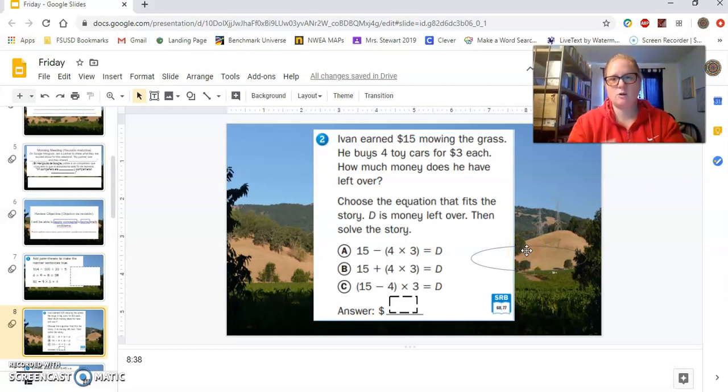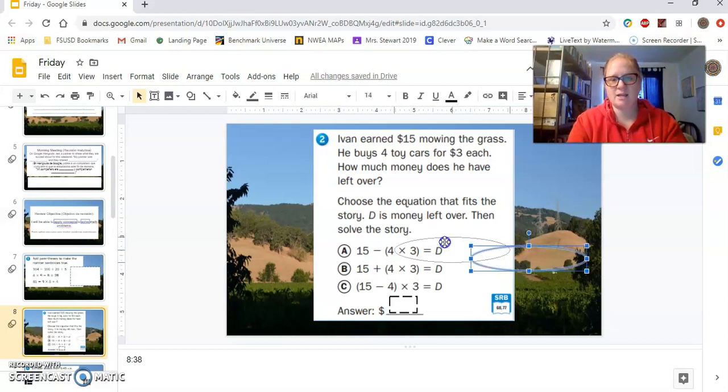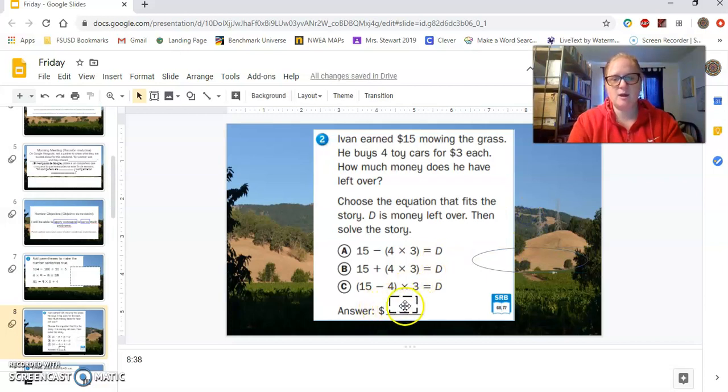When it has this cross like this, that means it's ready to drag. So you can click and then drag it over to whichever one you think is the right answer. Once you've made your selection, go ahead and tell me what the answer is. And the question is asking, how much money does he have left over? So that would be how much money he has left over for that box.